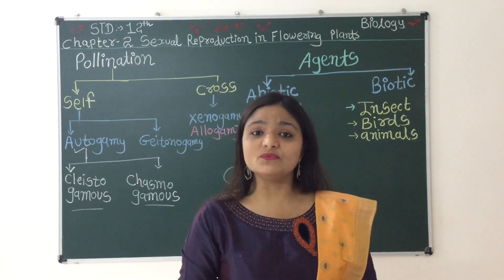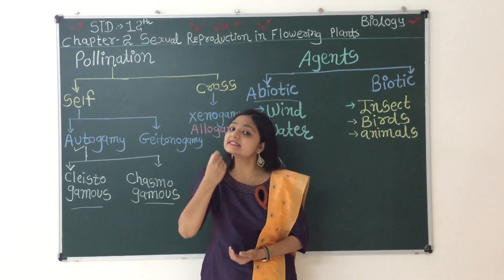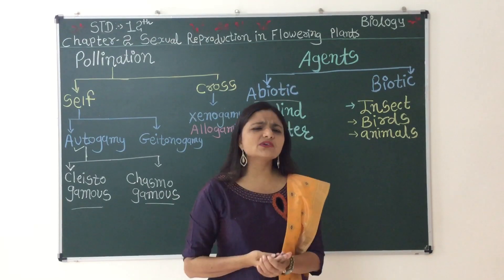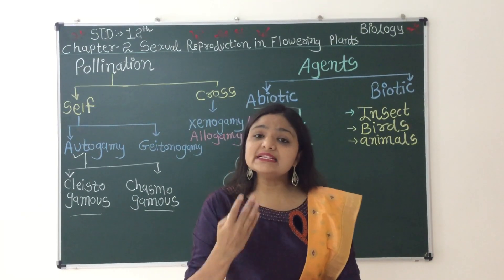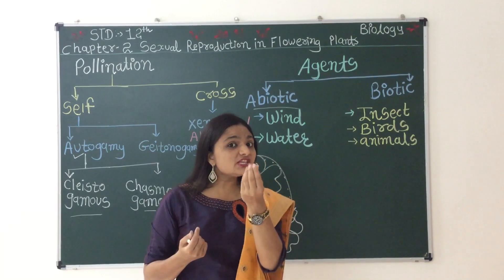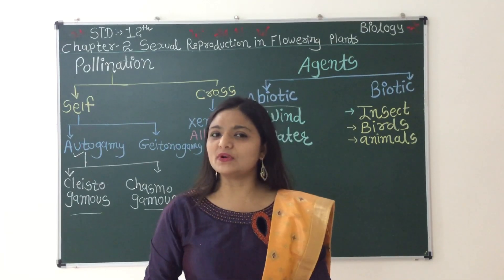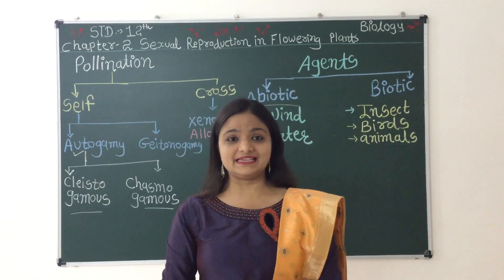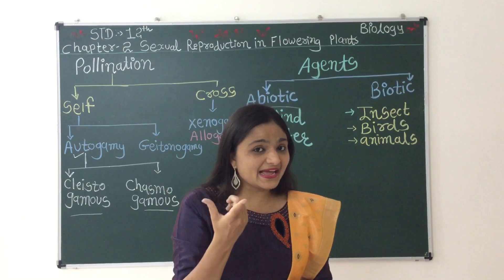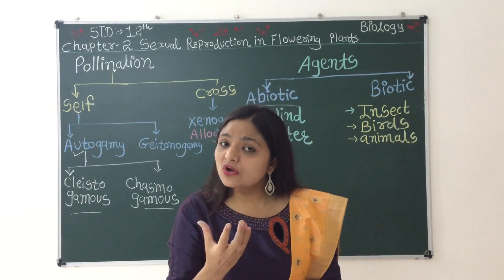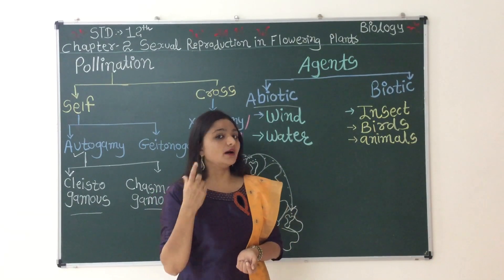The pollination done by wind — jo pollination wind se hoti hai — is called anemophily. Its characters: the pollen grains are dry, non-sticky, and light-weighted, so that they can easily fly in wind currents. Examples of anemophily include cotton, date palm, and corn cob.